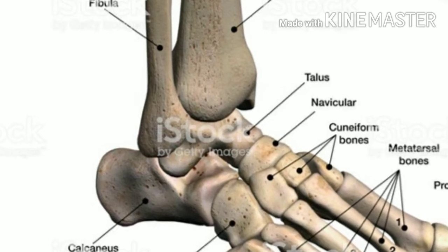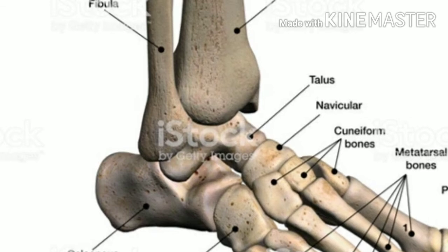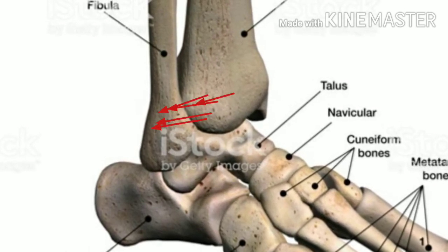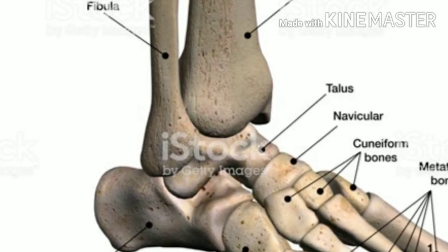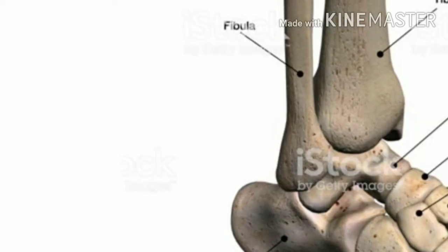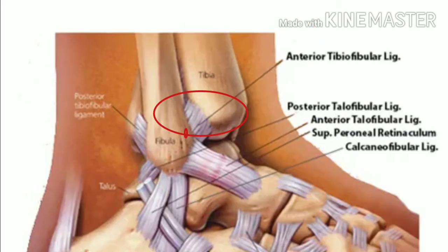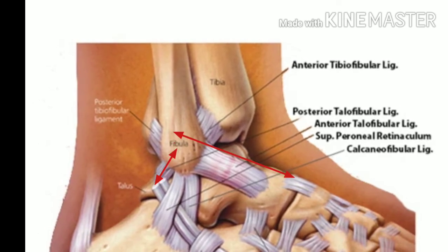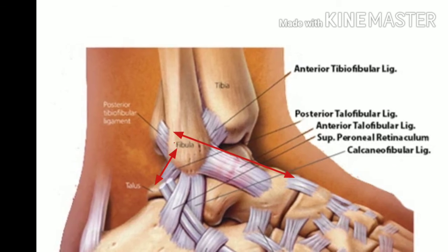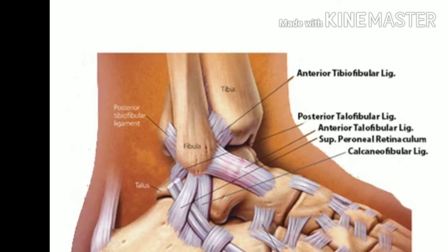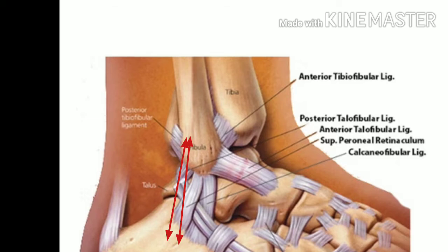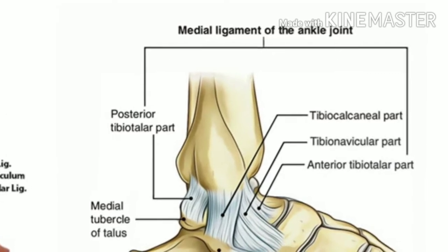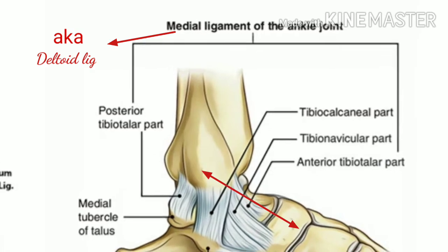The ankle joint leads to a lot of ligament injuries. The ligaments are easy to remember — they are named after the bones they connect. There is the anterior tibio-fibular ligament joining the tibia and fibula. Then there is the talo-fibular ligament connecting the talus and fibula, which has two parts: anterior and posterior. Similarly, there is the calcaneo-fibular ligament joining the calcaneum and fibula. On the medial side, we have the deltoid ligament.